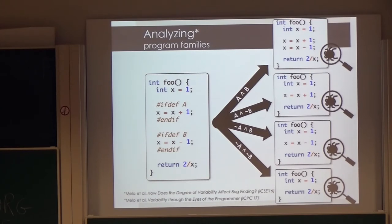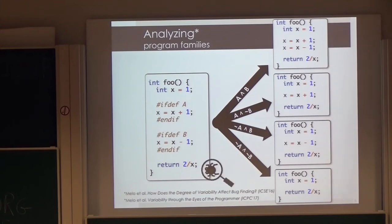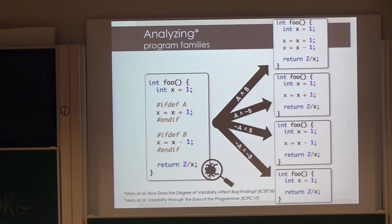There are techniques like sampling — you could generate random configurations, or pairwise or t-wise sampling. The other way is to analyze the entire family code at once. This is called family-based analysis or variability-aware analysis. Instead of analyzing each configuration at a time, you analyze the entire family at once, and you need a clever parser, type checker, or similar tools to deal with preprocessor directives.